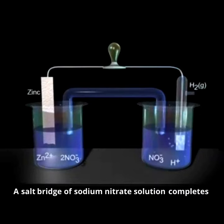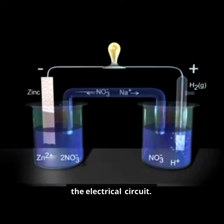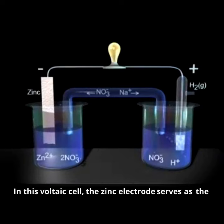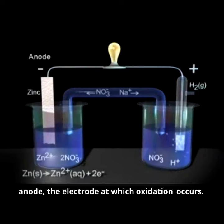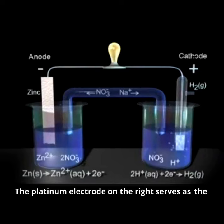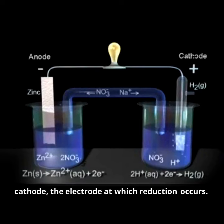A salt bridge of sodium nitrate solution completes the electrical circuit. In this voltaic cell, the zinc electrode serves as the anode, the electrode at which oxidation occurs. The platinum electrode on the right serves as the cathode, the electrode at which reduction occurs.